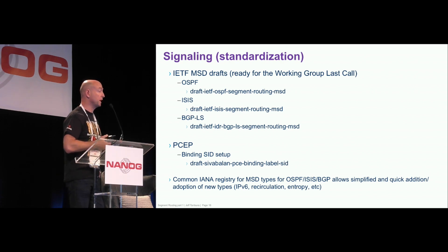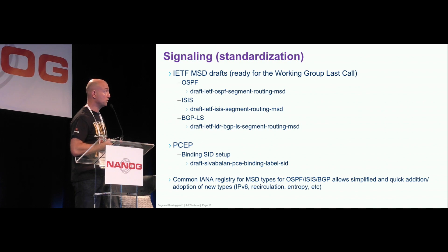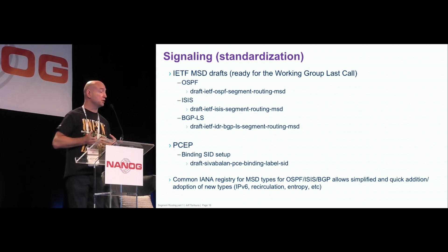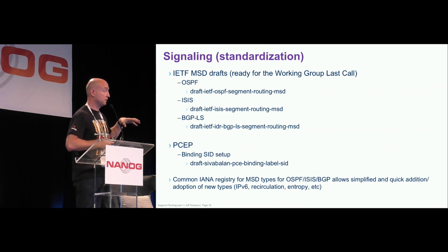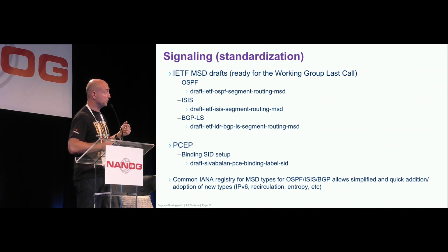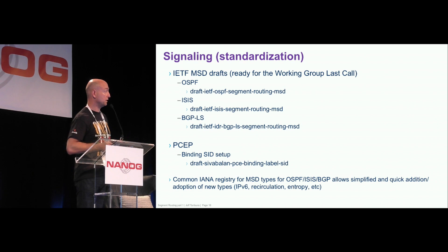From the centralization and signaling perspective, MSD is described in three drafts — all three have gone through IETF adoption and are ready for working group last call, which is the procedure in IETF before a document becomes an RFC. Thinking about the future, we've created a common IANA registry for MSD types across all the protocols, so you don't need to go and change and tweak every protocol. Base MSD is defined as number of labels a node can push. You can define new types — for recirculation, entropy, IPv6 — which gives you the ability to innovate very fast. It could go through IETF in less than a year.